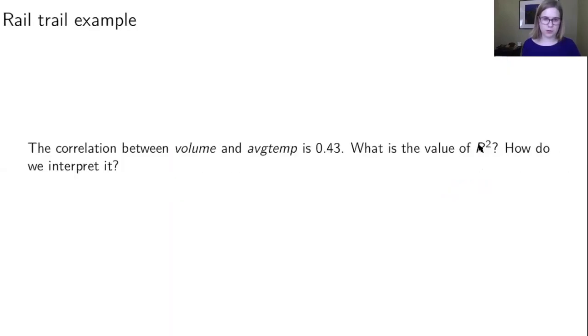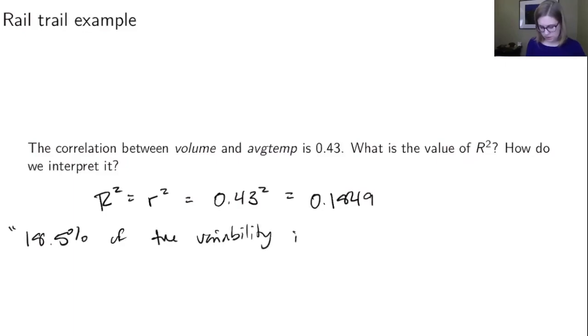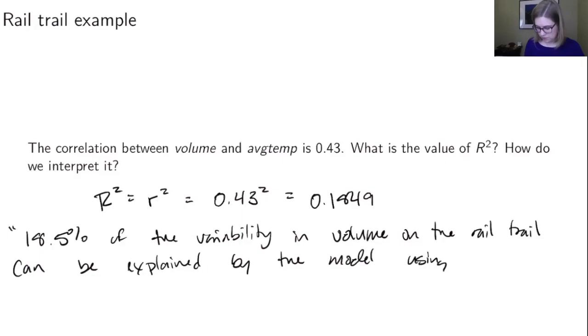So let's think about that with our rail trail example. The correlation between volume and average temperature is 0.43. And then we could compute the value of R squared, which would be equal to little r squared, which is 0.43 squared, which is 0.1849. So that is the value of our R squared. And then the question is, how do we interpret it? We say 18.5% of the variability in volume on the rail trail can be explained by the model using average temp.